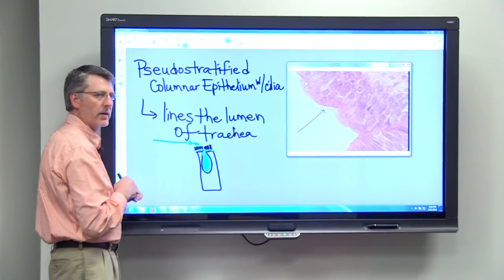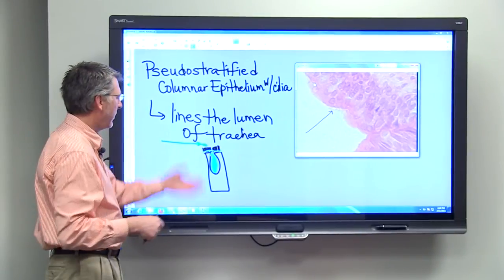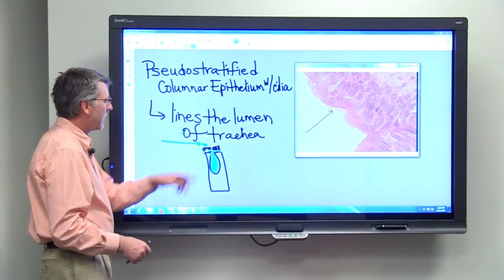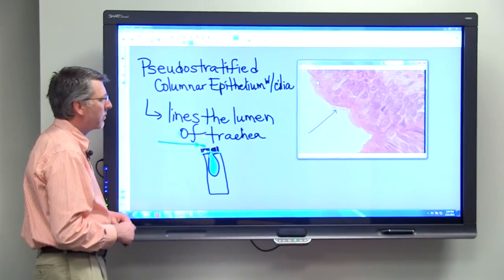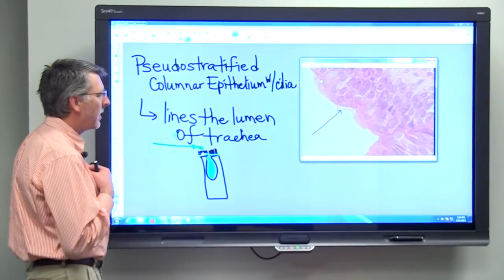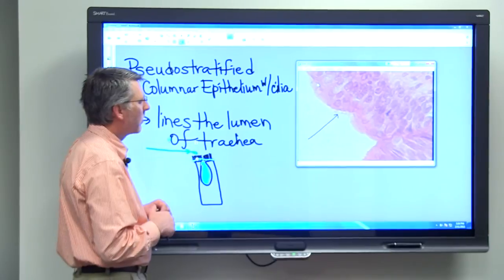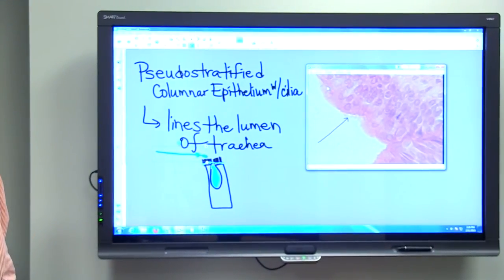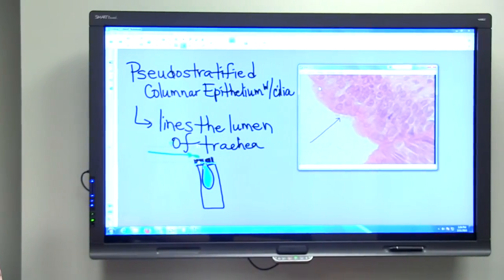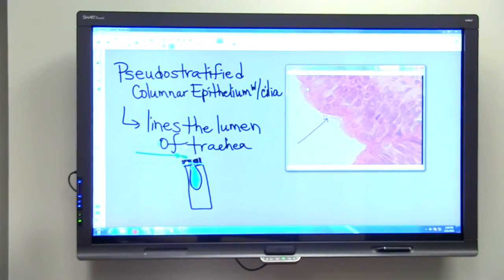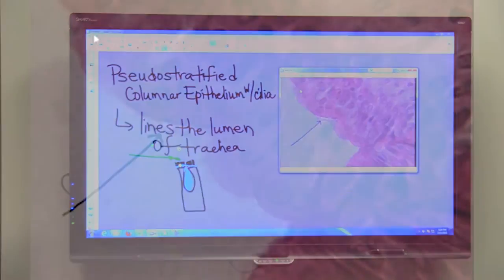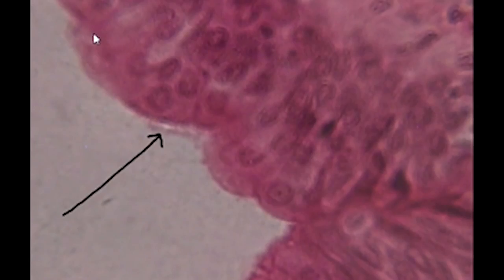The cilia can move that up towards your larynx. When it gets to your larynx, you can cough and then swallow or spit. Either way, you get that piece of debris out of your trachea and somewhere that's more appropriate. Look in this area for the cilia, and I'm going to adjust the magnification just a little bit which will help you pick up those cilia. Really fine and hard to see on this particular slide.